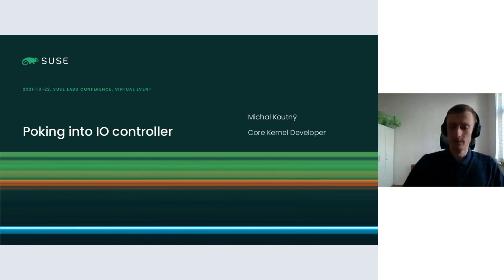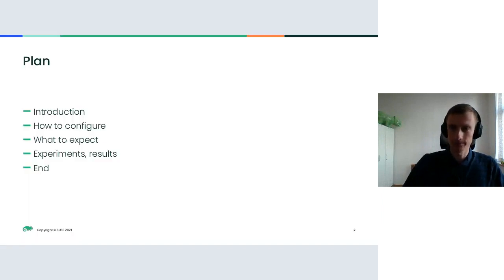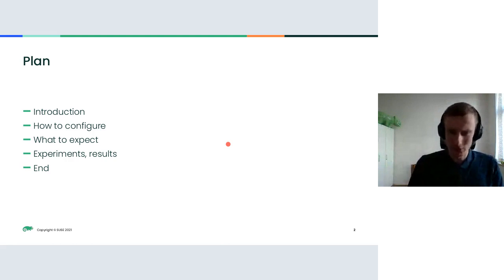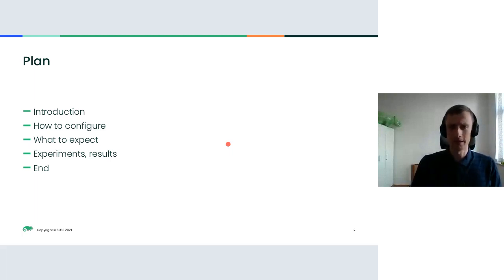I want to mention that I am not an expert for IO control exactly, and this will be a more practical talk. First I will give a short introduction, then we will look at how to configure the IO controller, what our expectations should be, then I have some experiments and results, and then we will end.